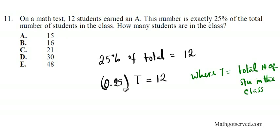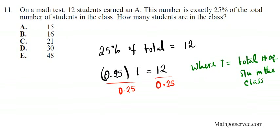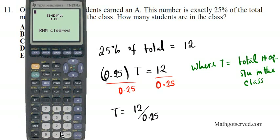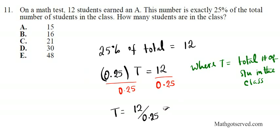To get t by itself, we divide both sides by 0.25. So t equals 12 divided by 0.25. Calculators are allowed on the test, so we can just enter 12 divided by 0.25, which equals 48. So t equals 48, and the answer to number 11 is option E.